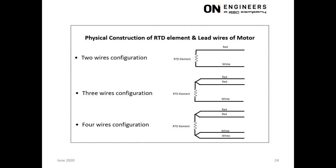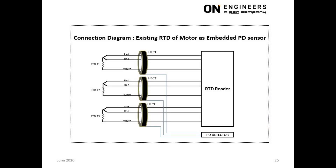This slide shows three typical constructions of RTD. The two-wire RTD is less accurate in temperature measurement because the resistance of the lead wires is included. The three- or four-wire RTD is more accurate because the resistance of the lead wires is subtracted from the measurement. This slide shows the connection of an HFCT over all the respective lead wires of the RTD; the best point of measurement is at the RTD terminal box at the motor.